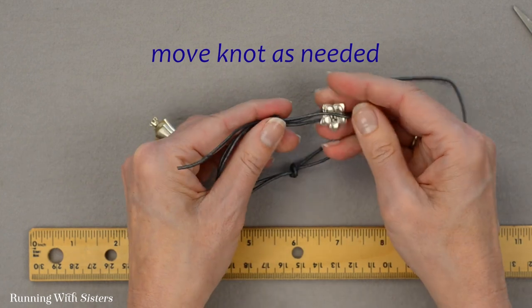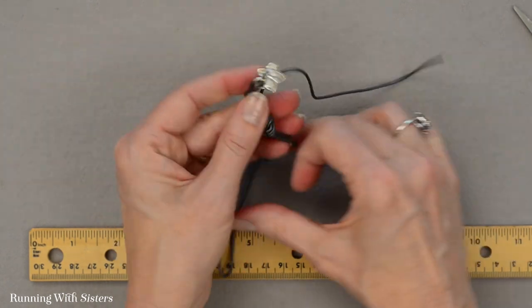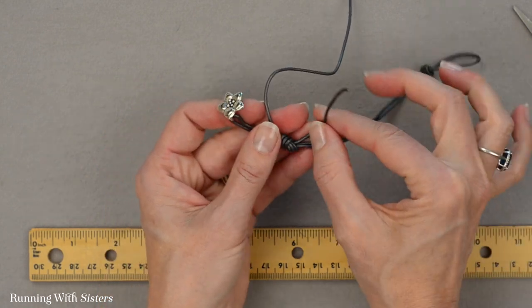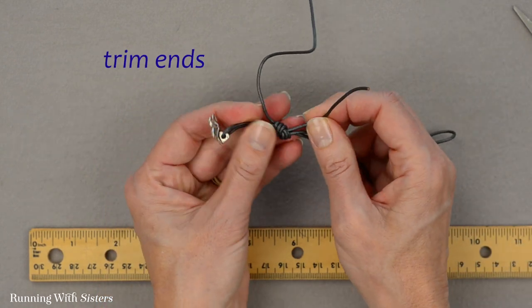So now we've got our button clasp on one end, our loop at the other, and we want to trim these little loose ends that we have here.